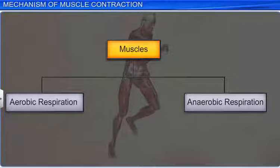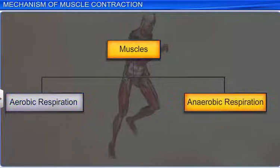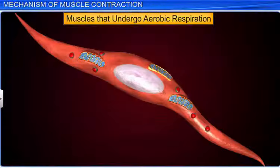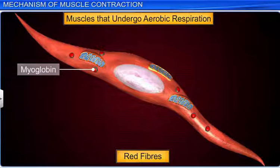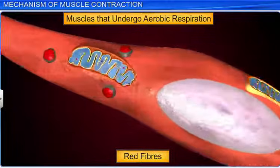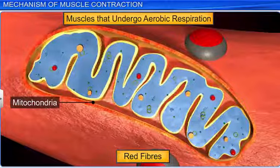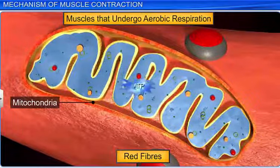Muscles can be of two types: those that undergo aerobic respiration, and those that depend on anaerobic processes for energy. Muscles that respire aerobically are also called red fibers. They are thus named because these muscles contain a red pigment called myoglobin that stores oxygen. These muscles also have several mitochondria that consume the stored oxygen for ATP production.